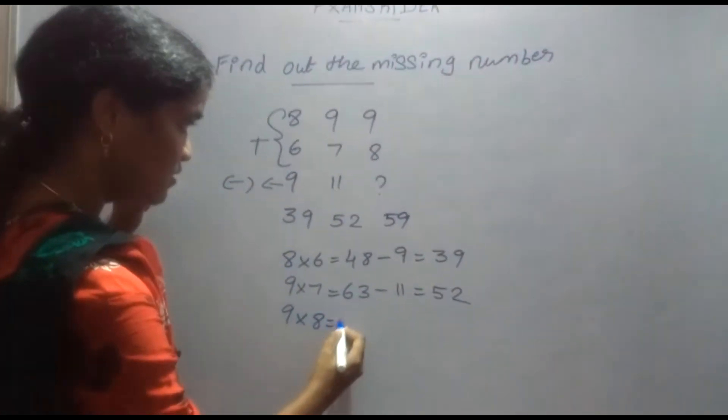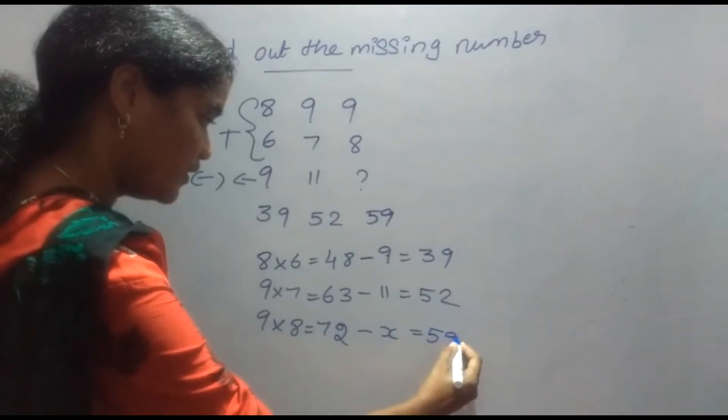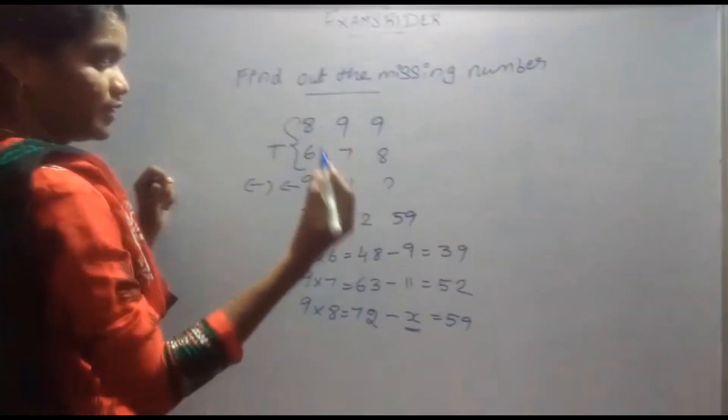9 into 8, 72 minus x is equal to 59. We have found the value of x here.